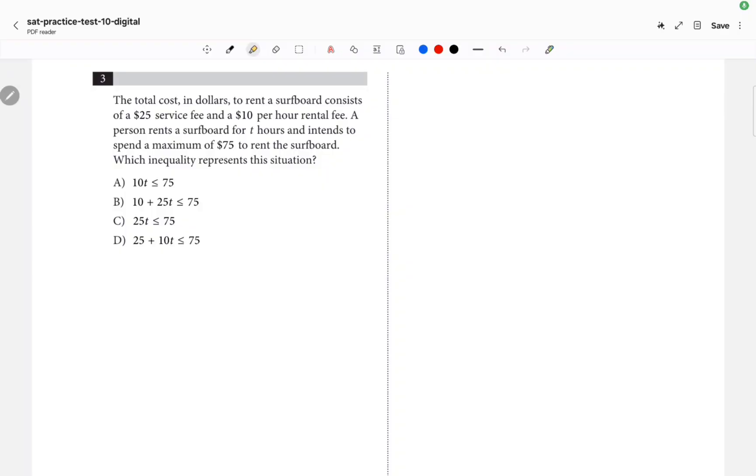The total cost in dollars to rent a surfboard consists of a $25 service fee and $10 per hour. This 'per hour' basically means mx, and this $25 alone is plus b. Right now we have Y equals mx plus b. The b is the number that's alone and the mx is going to be 10x. So the equation has to be 10x plus 25. Maximum of 75 means less than or equal to 75. So the answer is going to be choice D.